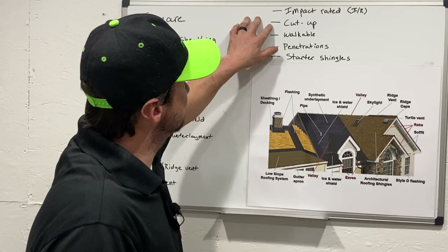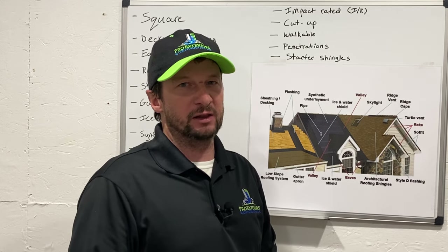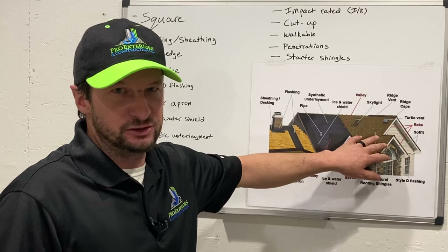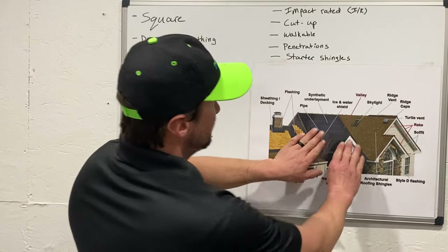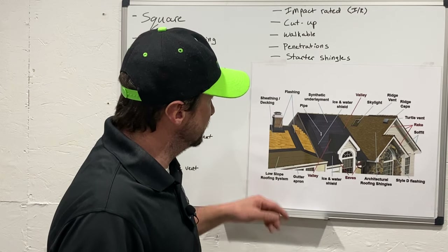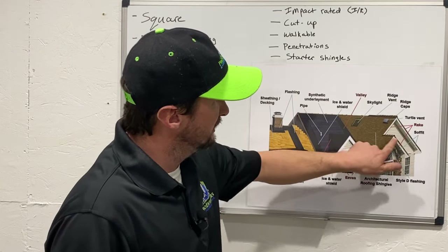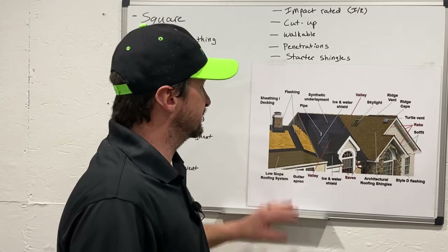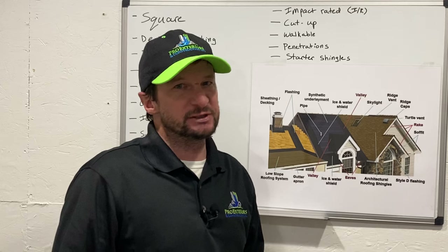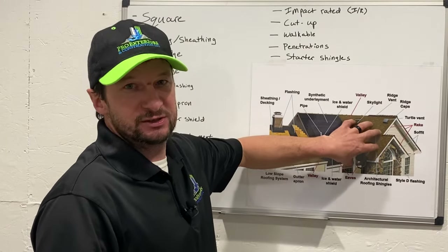The next term is cut up. That's probably not a term you'll hear much outside of roofing, but it refers to how many sections your roof is divided into. If your roof was just one flat straight section, it wouldn't be cut up much. But on a roof like this one, you'd have one section here, two, three, four, five, six — just on one side. Double that on the other side and you'd have 12 different sections. A roof like this would absolutely be considered very cut up.